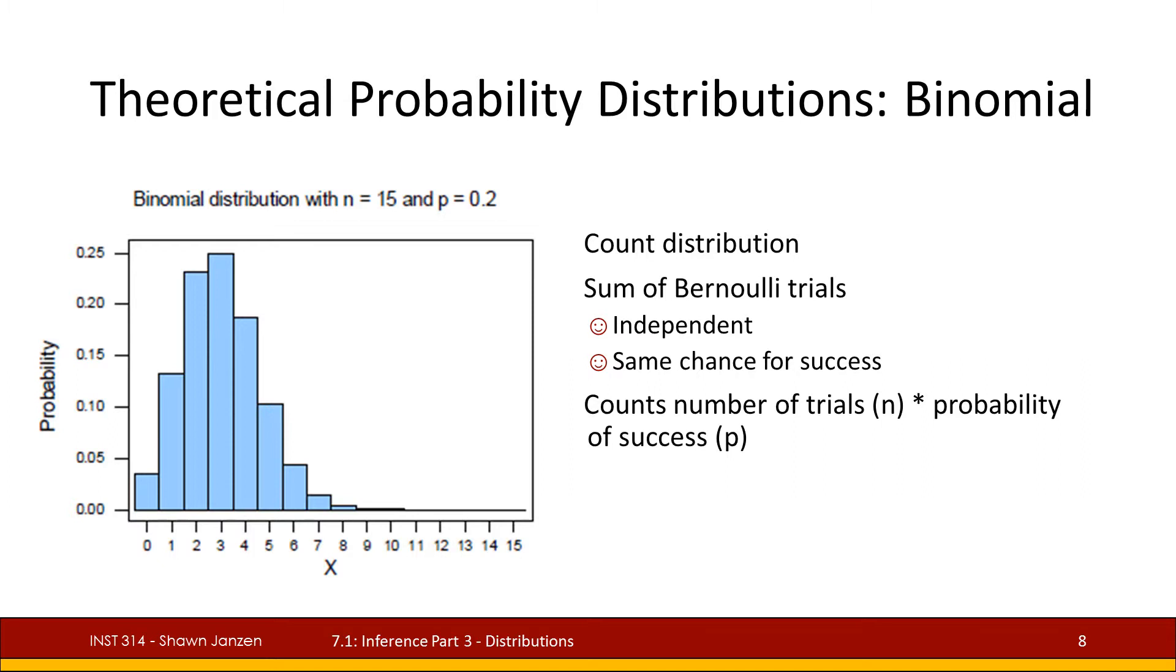No matter what happens from a previous activity it's not going to influence the current activity. So if I'm flipping a coin when I flip it a second time the outcome of the second flip is not going to be determined by the outcome of the first flip and the second flip is going to have the exact same chance of success as the first flip.